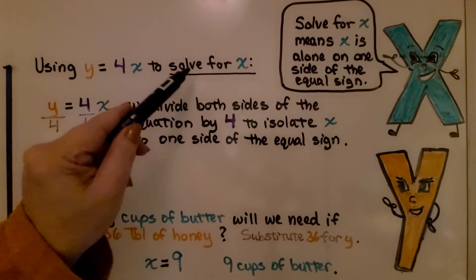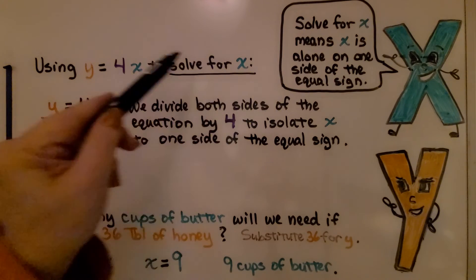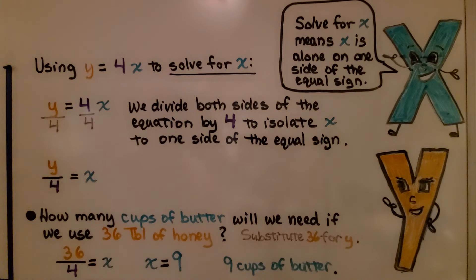Remember, when it says to solve for a variable or solve for x, that means x is alone on one side of the equal sign. So how many cups of butter will we need if we use 36 tablespoons of honey? We just substitute 36 for y. We have 36 divided by 4, that's equal to x. x is equal to 9. That would be 9 cups of butter. That would be a lot of cinnamon honey butter.